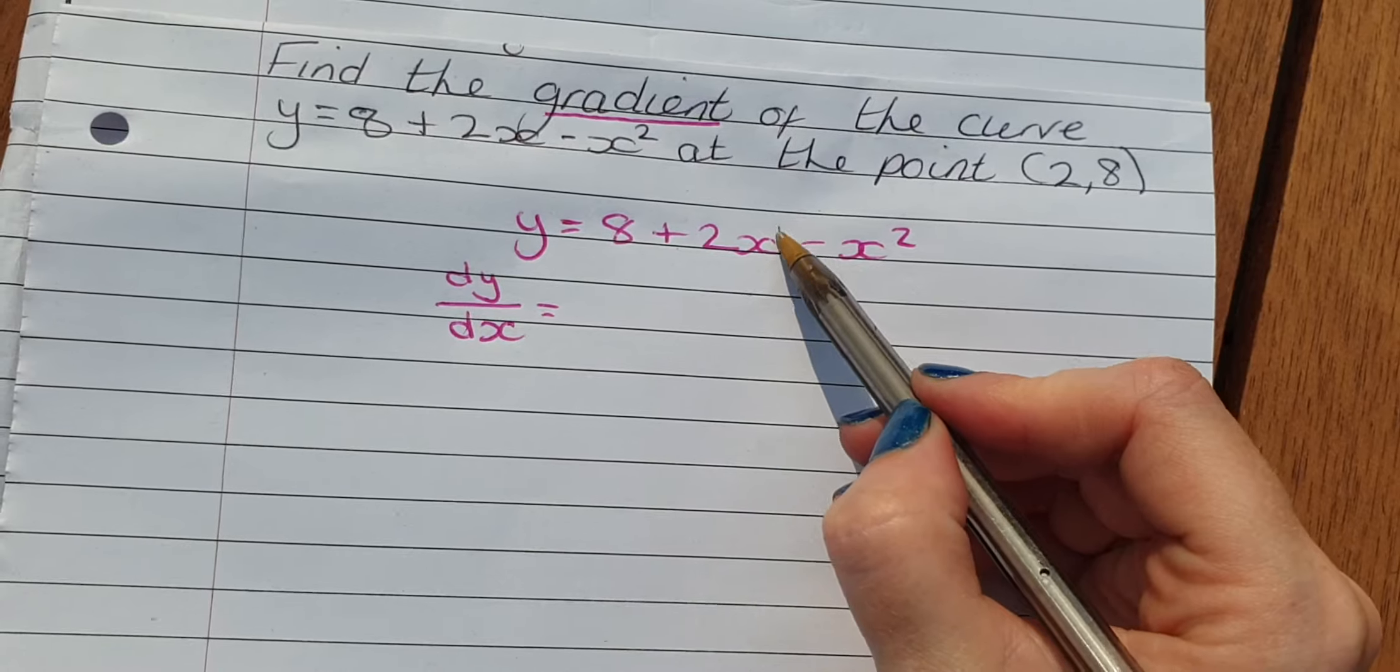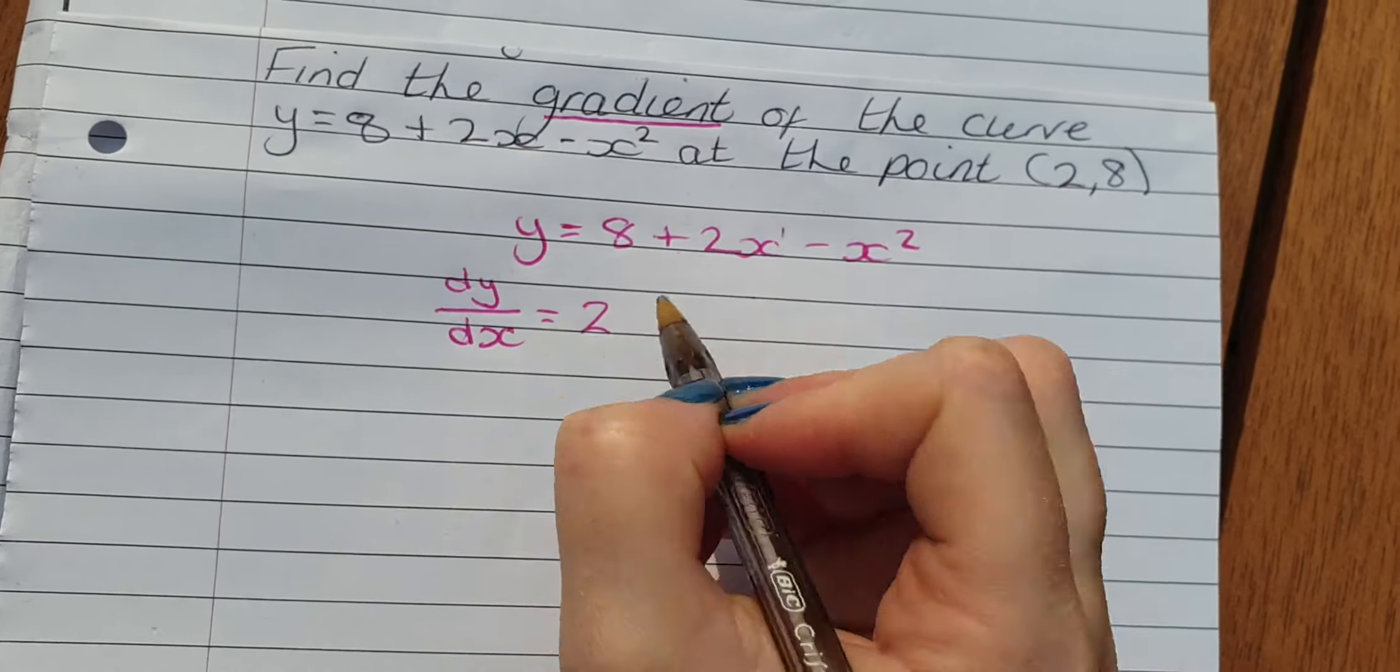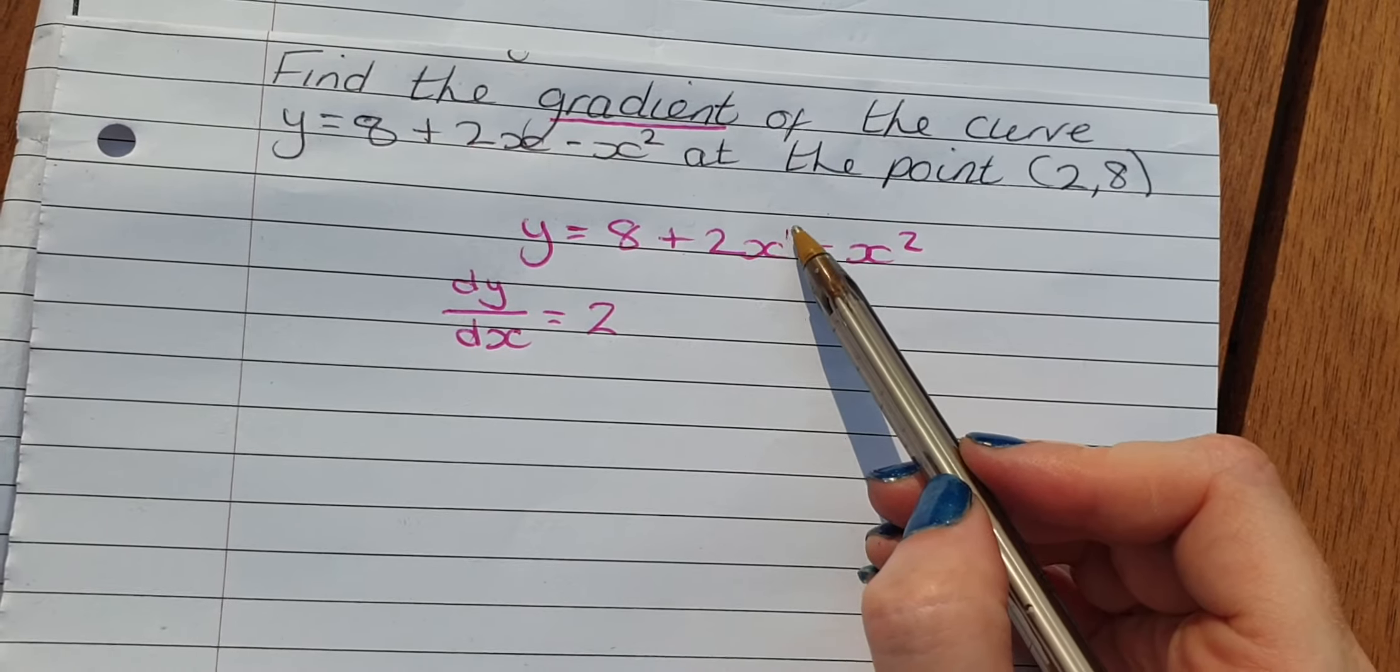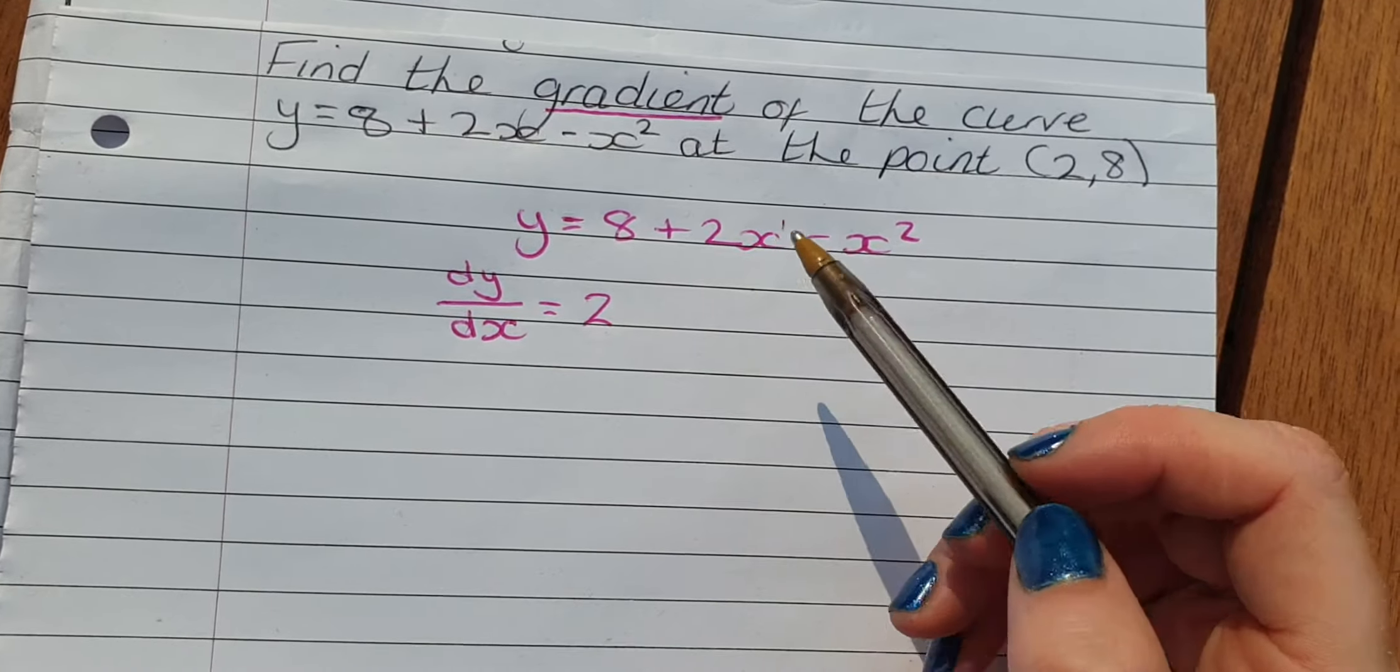x has a power 1, so 2 times 1 is 2. Reduce the power by 1, which is x to power 0, which is 1. So 2 times 1 is 2.